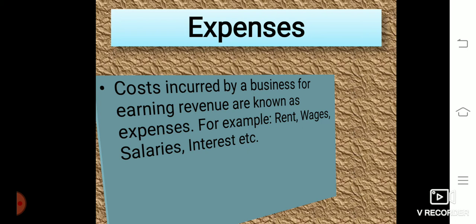Next is expenses. Costs incurred by the business for earning revenue are known as expenses — for example, rent, wages, salary, and interest. These are all the basic accounting terms covered in this lesson.